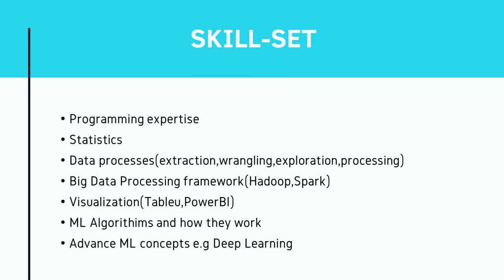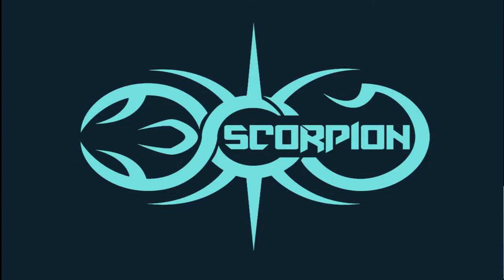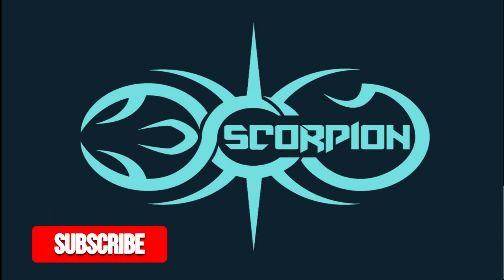A data scientist must have knowledge of machine learning algorithms and how they work. Additionally, they are expected to have knowledge of advanced machine learning concepts such as deep learning. Generally, a data scientist should be of a curious mind, an analytical thinker, and a creative problem solver. So that's it for today, guys — until next time, I'll see you on the other side. Thank you, and this is from the Education and Transport's.